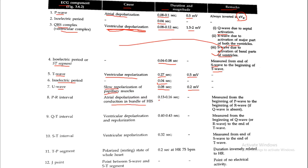The PR interval represents atrial depolarization and conduction in the bundle of His. Its normal duration is 0.13 to 0.16 second. It is measured from the beginning of the P wave to the beginning of the R wave, or if the Q wave is absent, from the beginning of the P wave to the beginning of the Q wave.